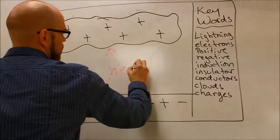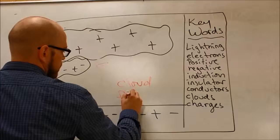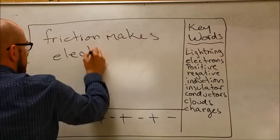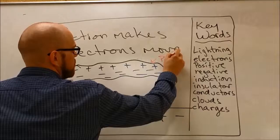That makes the ground and the cloud all neutral. When other clouds rub up against the clouds you have friction. Cloud friction makes electrons move between them. Friction makes electrons move. Now the electrons start polarized to the bottom of the cloud, making the top positive and the bottom negative.